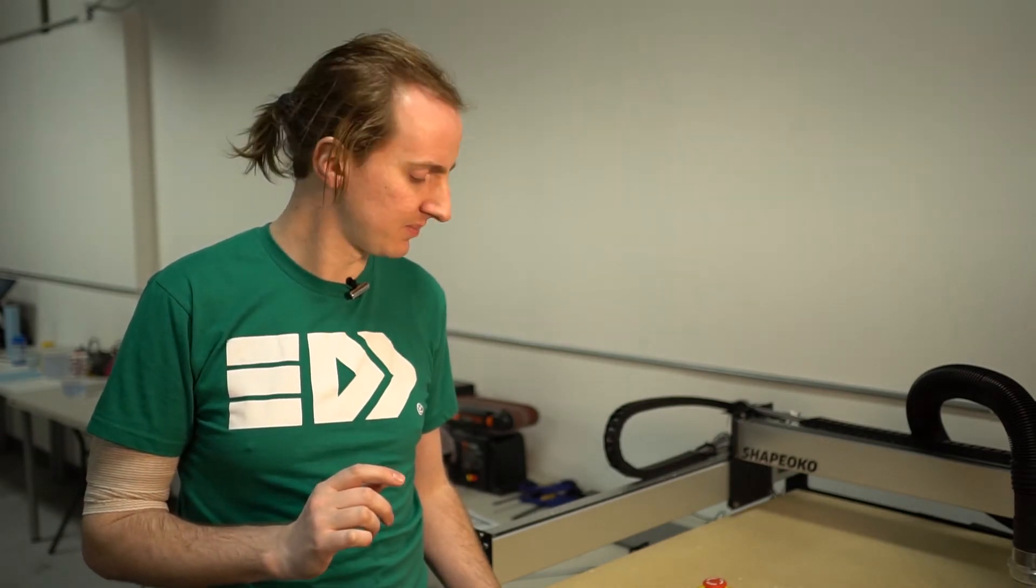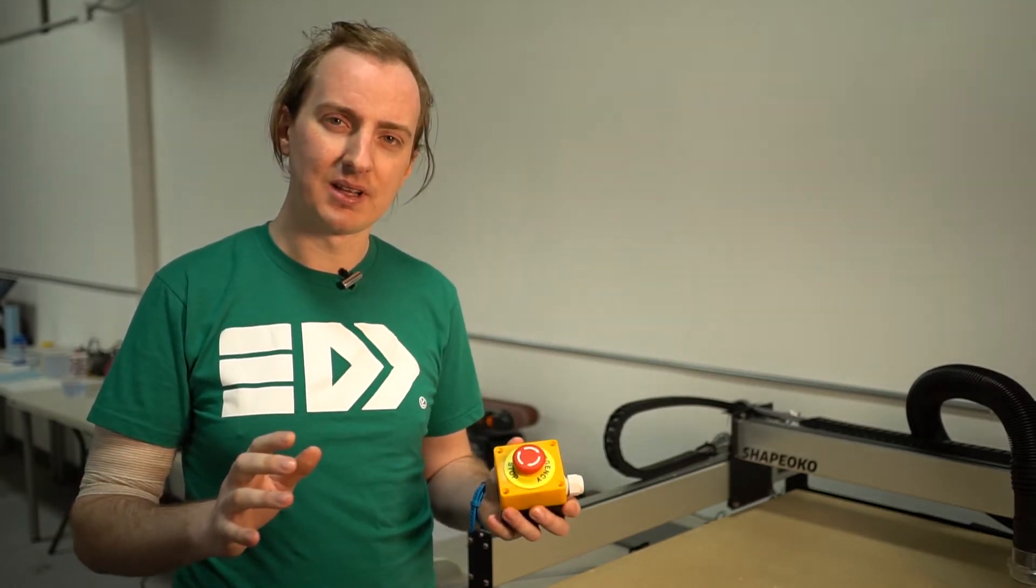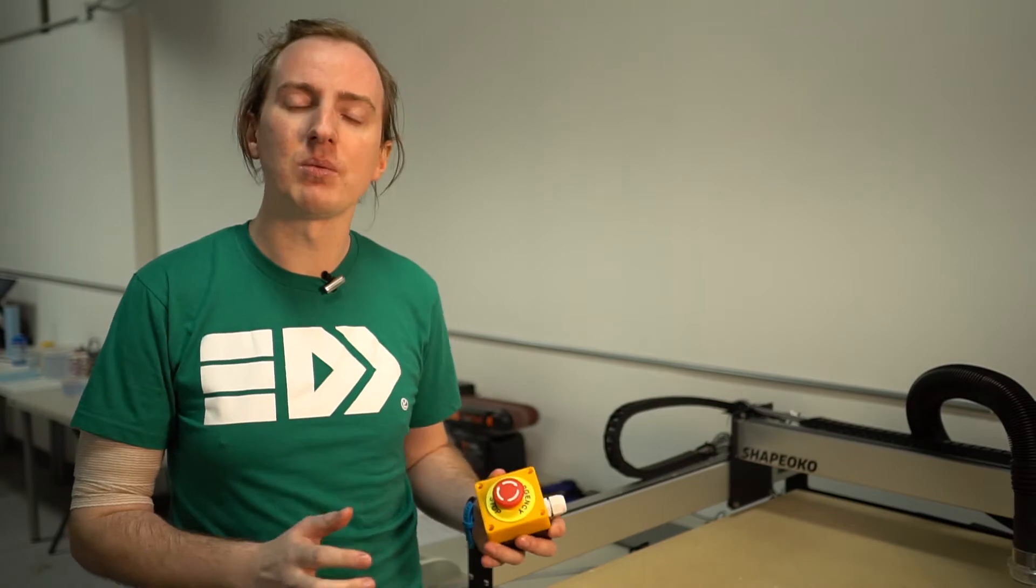Now, the Shapeoko is a great kit. I really enjoyed building it, but it does have one small problem, and that is there's not quite as many safety features as I like. When I do machines, I like to have one of these, an emergency stop button, because when something's going south, the number one thing I want to do is stop the machine in its tracks.